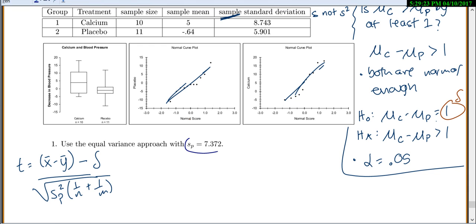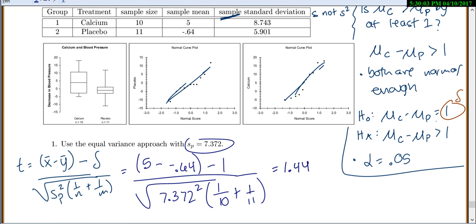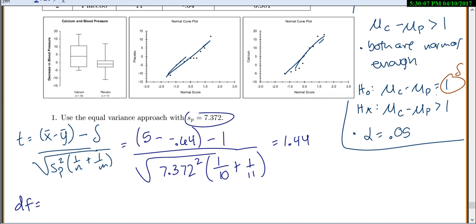I was really nice here and I calculated sp for you. Our sample means are 5. We're doing calcium first because that's what we wrote first, so calcium first. We'll do 5 minus negative 0.64 minus our delta, or hypothesized difference, which is 1. Square it, we have our pooled standard deviation here at 7.3. Intuitively we just need to square it. 1 over sample size for calcium is 10, sample size for placebo is 11. If I put this in, I get 1.44. Degrees of freedom is n plus m minus 2. You have different degrees of freedom for your equal variances versus unequal variances. So it's 10 plus 11 for our two sample sizes minus 2, which is 19.